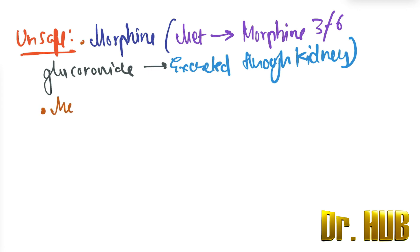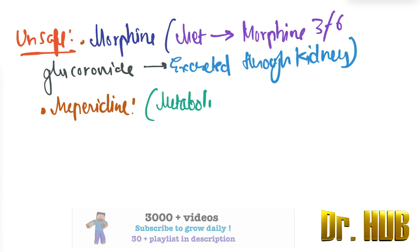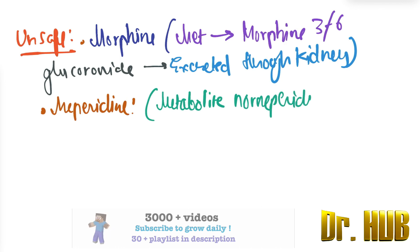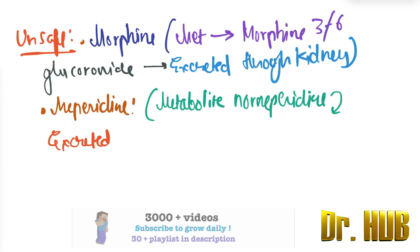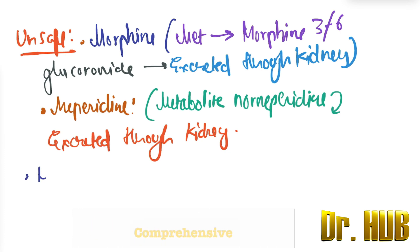Then comes meperidine. Meperidine has a metabolite called normeperidine, which is excreted through the kidney. Accumulation of normeperidine in renal failure makes meperidine unsafe.